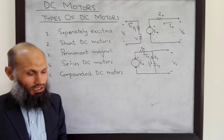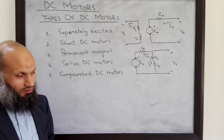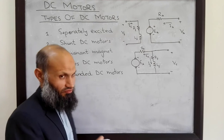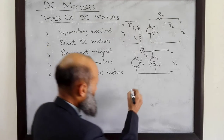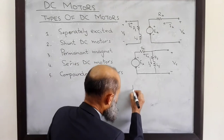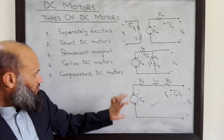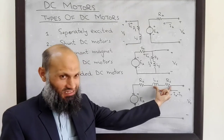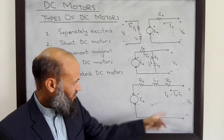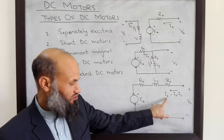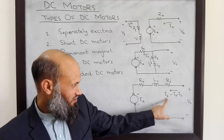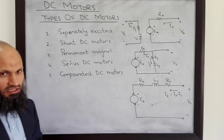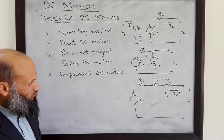In series DC motors, field windings are connected in series with the armature windings, as shown in this diagram. The armature circuit is connected in series with the field windings, and in series DC motors, the field current is the same as the armature current, which is equal to the total load current drawn by the motor.